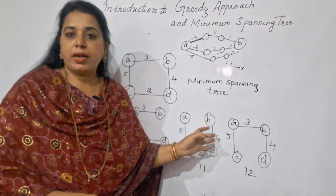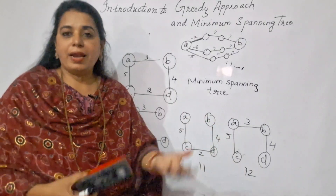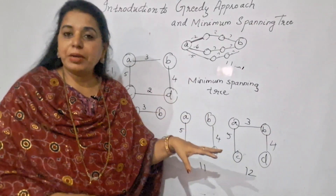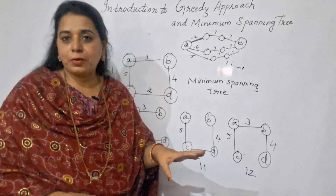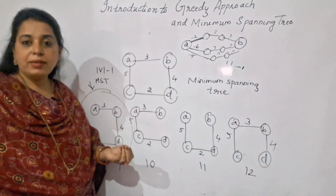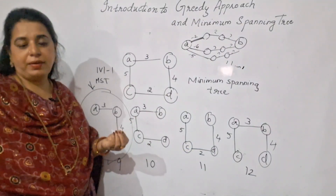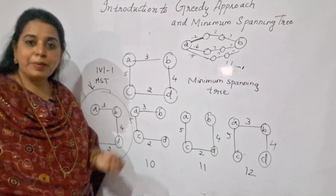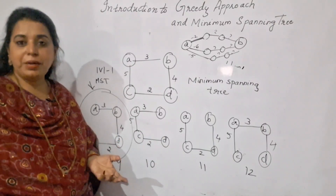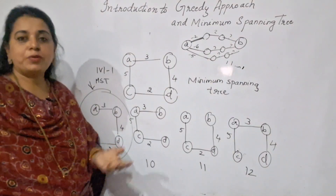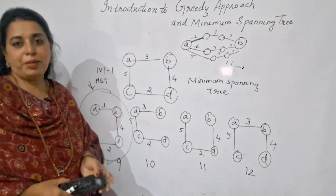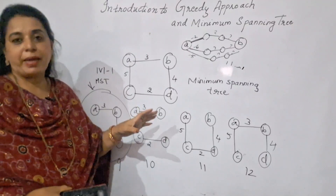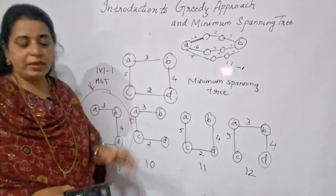For a small graph we can manually identify the minimum spanning tree, but an algorithm needs a systematic mechanism. Prim's algorithm is one such mechanism used to determine the minimum spanning tree. Kruskal's algorithm is another. Both Prim's and Kruskal's algorithms are used to determine the minimum spanning tree of a weighted connected graph.